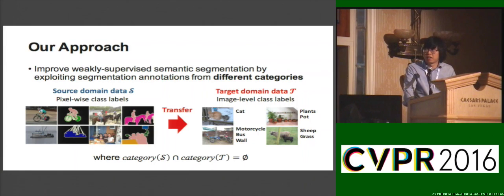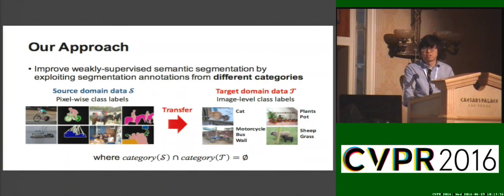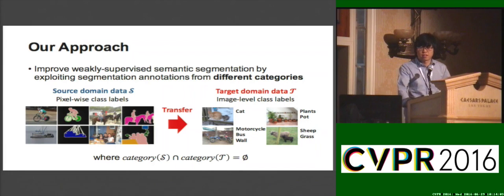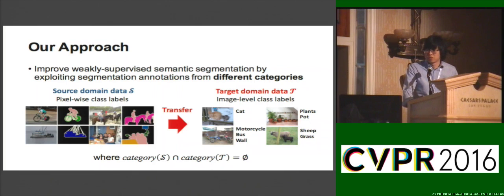We assume that we have two sets of data in source and target domains, which are associated with segmentation annotations and image level class labels respectively. Our objective is to learn knowledge for semantic segmentation and transfer it from source to target domain categories. We assume there is no overlap between semantic categories in the two domains, so the problem is very challenging.